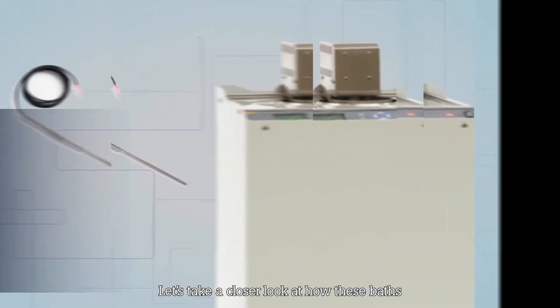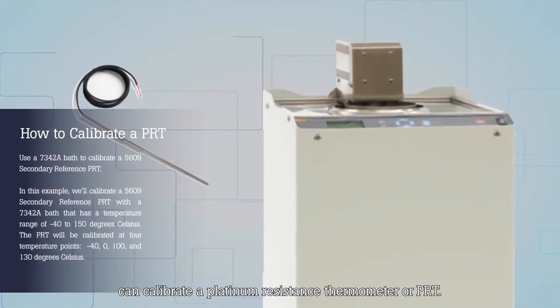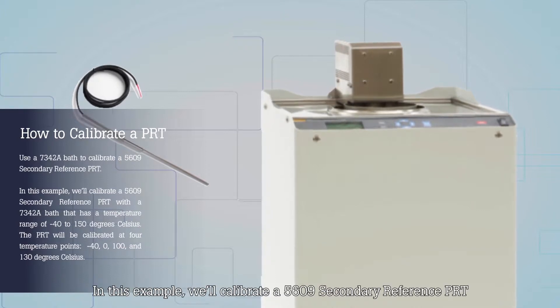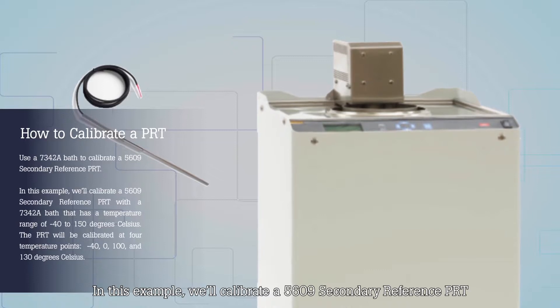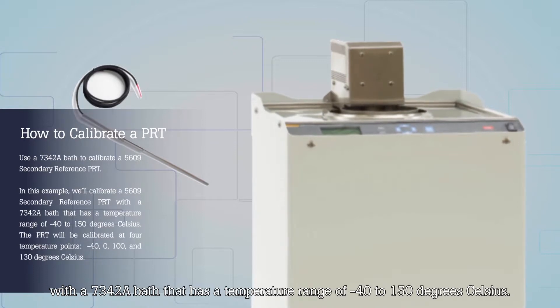Let's take a closer look at how these baths can calibrate a Platinum Resistance Thermometer or PRT. In this example, we'll calibrate a 5609 secondary reference PRT with a 7342 bath that has a temperature range of minus 40 to 150 degrees Celsius.